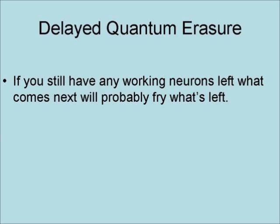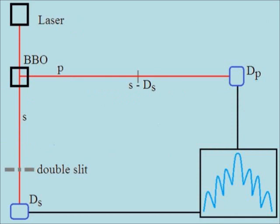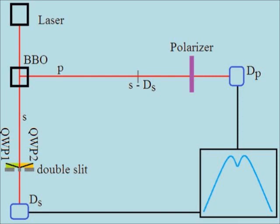What comes next will probably challenge what's left of your intuition. The experiment extends the P photon's path to beyond the S photon's distance to DS. Without the QWPs, we get the interference pattern; when the QWPs are put back, the interference pattern is lost and the double peak pattern returns. Now, placing the polarizer in the path of the P photon after the S photon has already been detected — common sense suggests we should get the double peak pattern. However, the result is the interference pattern again.